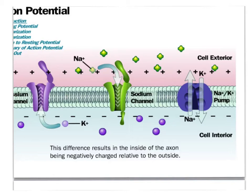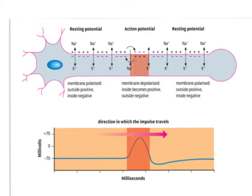So let's have a look at these in the axon. Let's just have a look at how this nerve impulse or action potential travels down the axon of the neuron. It travels from one end to the other, from the dendrites down to the axon terminal.